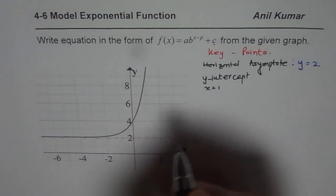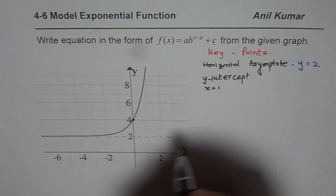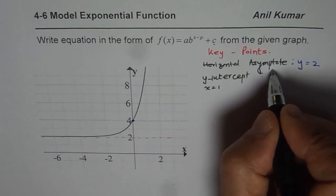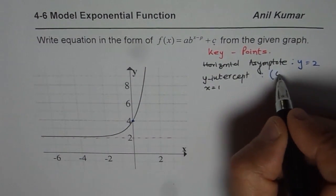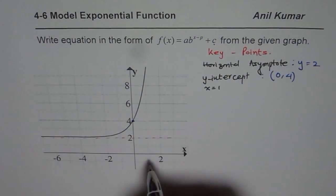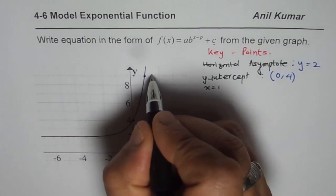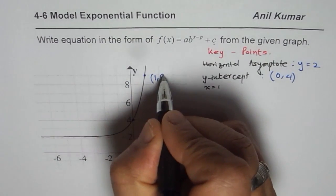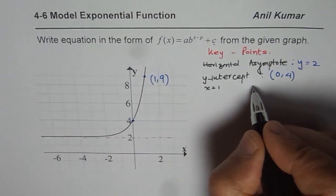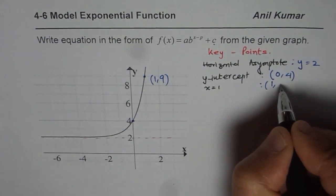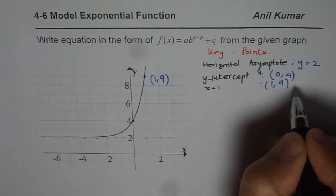As far as y-intercept is concerned, the value here is (0, 4). And a critical point will be: at x = 1 we see that the value of the function is 9. So this is a good point to take. At 1 we have 9. So this point is x = 1, y value is 9.